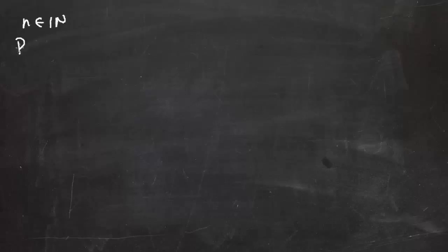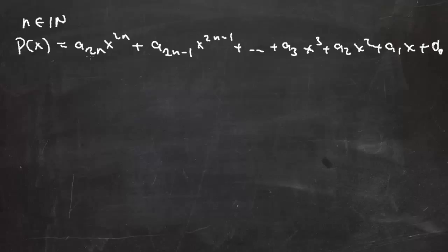N elemanıdır doğal sayı olmak üzere P(x) eşittir a₂ₙx^(2n) + a₂ₙ₋₁x^(2n-1) + a₃x³ + a₂x² + a₁x + a₀ polinomunu düşünelim. Bu polinomda x yerine 1 yazdığımız zaman elde ettiğimiz a₂ₙ + a₂ₙ₋₁ + a₃ + a₁ + a₀ olmakta.